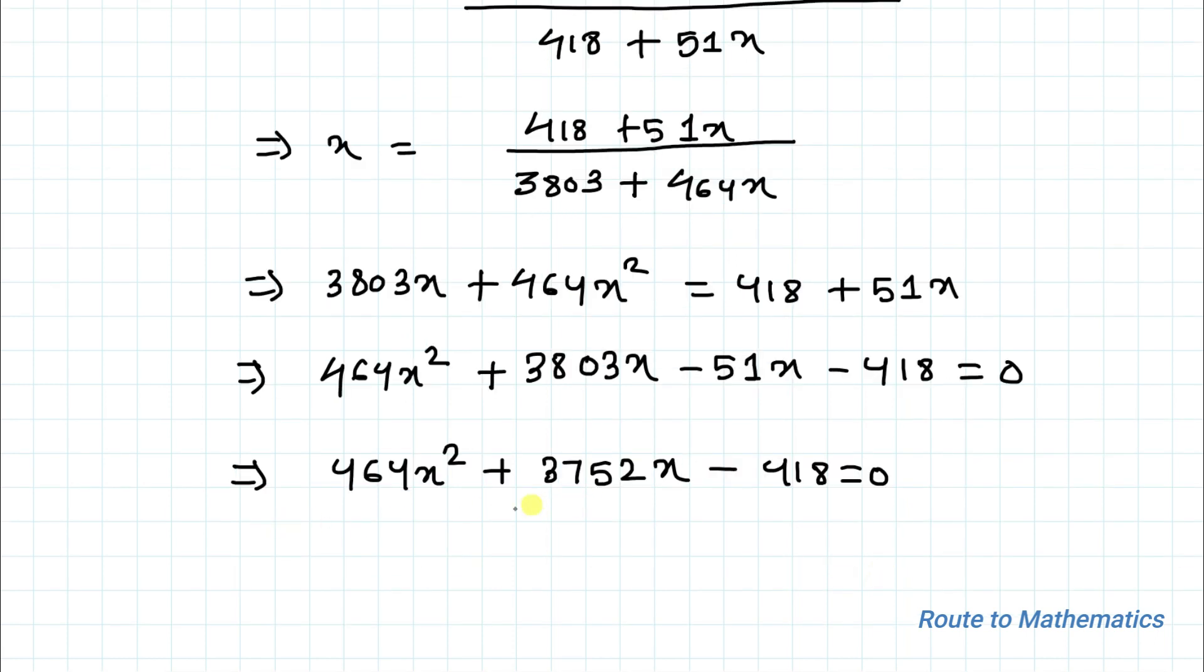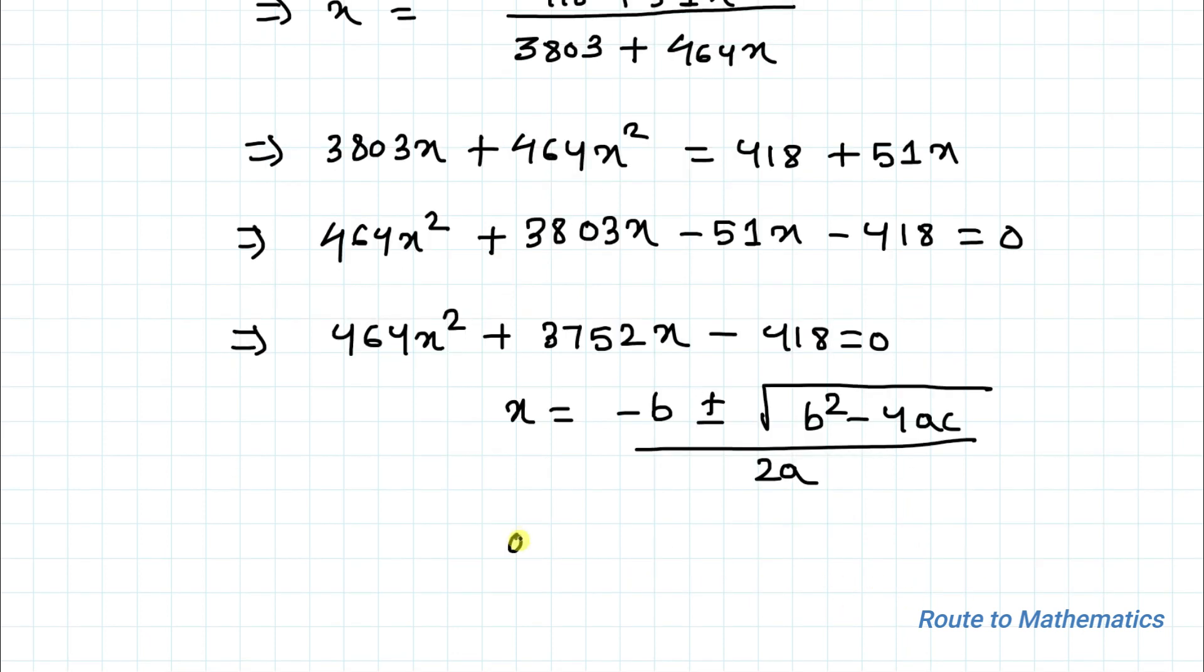Here we have a quadratic equation. In order to find the value of x, we will use the quadratic formula. We have x equals to minus b plus or minus root over b square minus 4ac divided by 2a. Here a equals to 464, b equals to 3752, and c equals to minus 418.